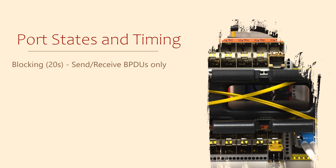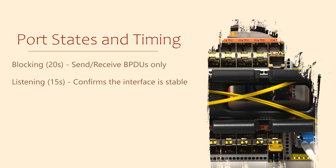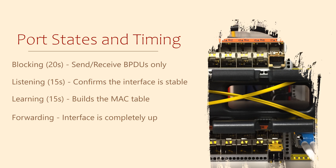First, the blocking state: for 20 seconds, the switch will not allow any traffic to pass other than BPDUs. This gives the switch time to determine if this will be a root port, designated, or remain blocking to prevent loops. If it remains blocking, it won't transition through the remaining states. Next, the port spends 15 seconds in the listening state, where it waits to see if the topology is stable — that is, that the interface isn't constantly going up and down. Third, the port enters the learning state, which also lasts 15 seconds. During this time the switch looks at the traffic it receives and uses it to build or update its MAC table, but it still won't forward traffic out the interface other than BPDUs. Finally, the port transitions to the forwarding state and can now forward normal traffic. With the original Spanning Tree, it takes about 50 seconds for a port to come online — simply not fast enough in a modern network.